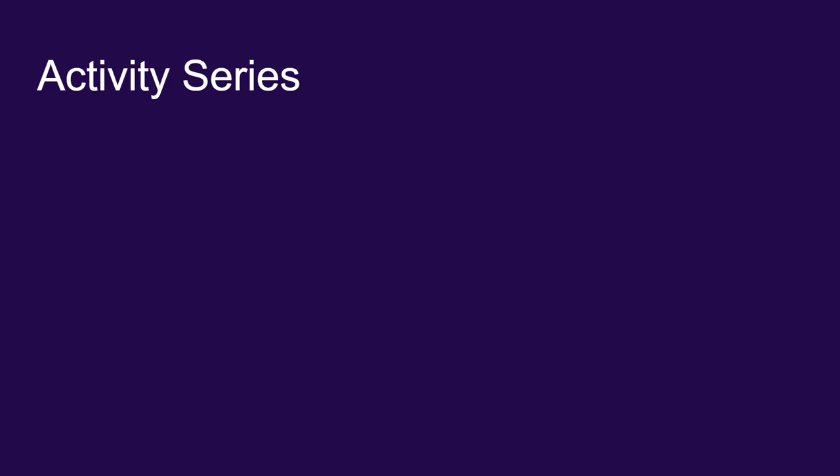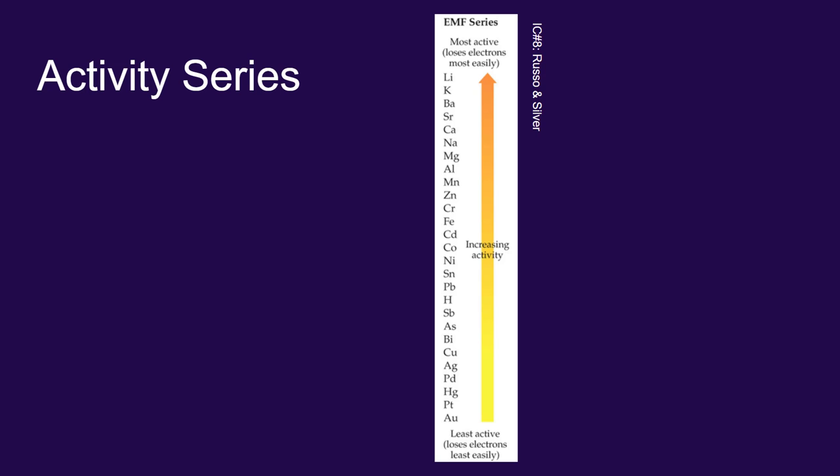This is all laid out on the backs of your periodic tables. I have copied and pasted this activity series on the backs of the periodic table. Russo and Silva refer to this as an EMF series. EMF is a physics term referring to electromotive force. It's an indicator about how much voltage you can get from a battery if you use different metals in combination. But I generally refer to this as an activity series. Which metals are more active and which metals are less active? In other words, which metals are more likely to oxidize and which metals are least likely to oxidize?